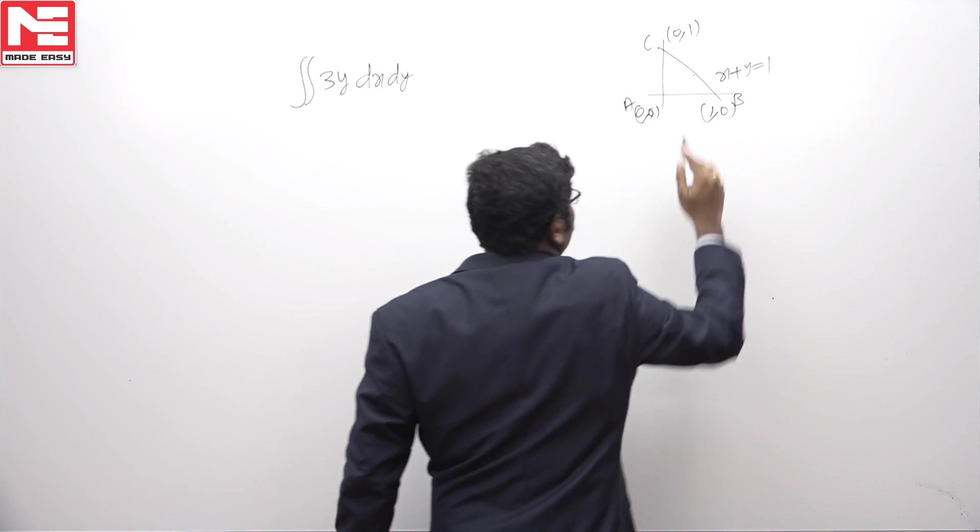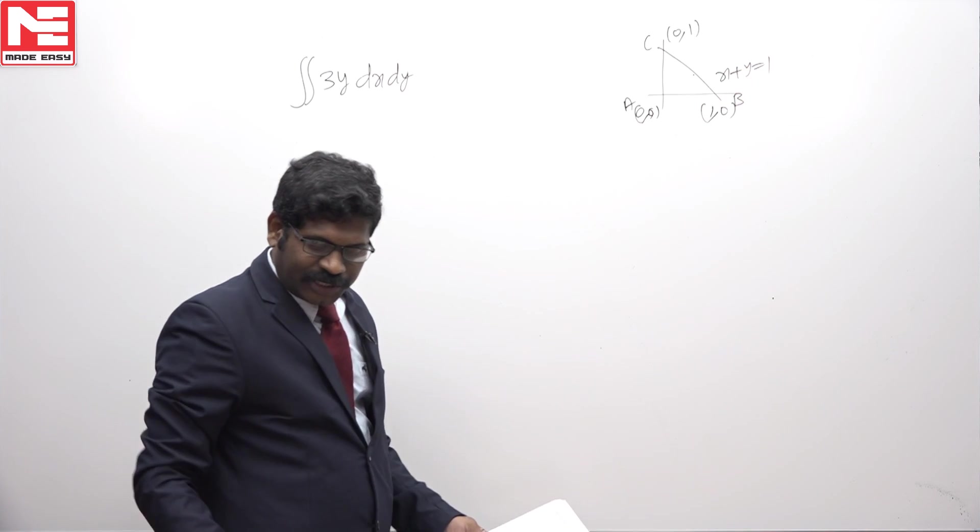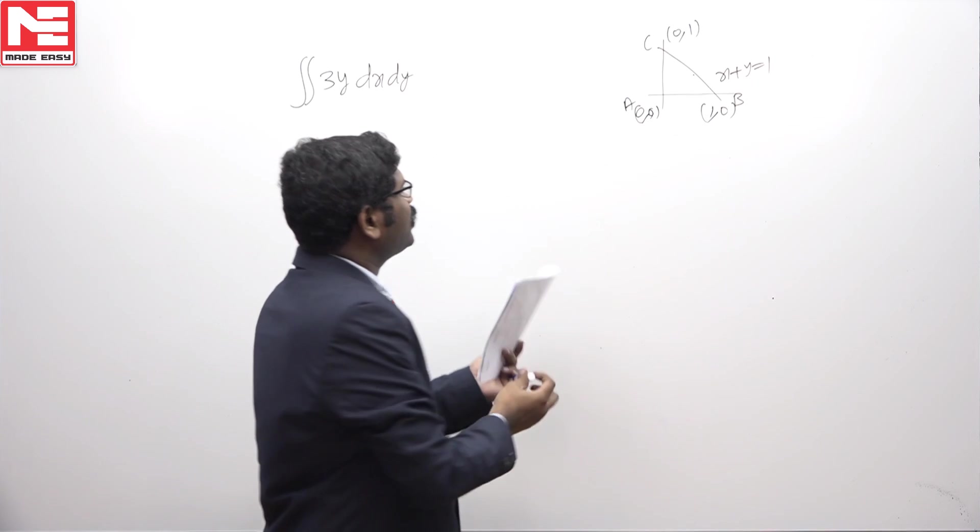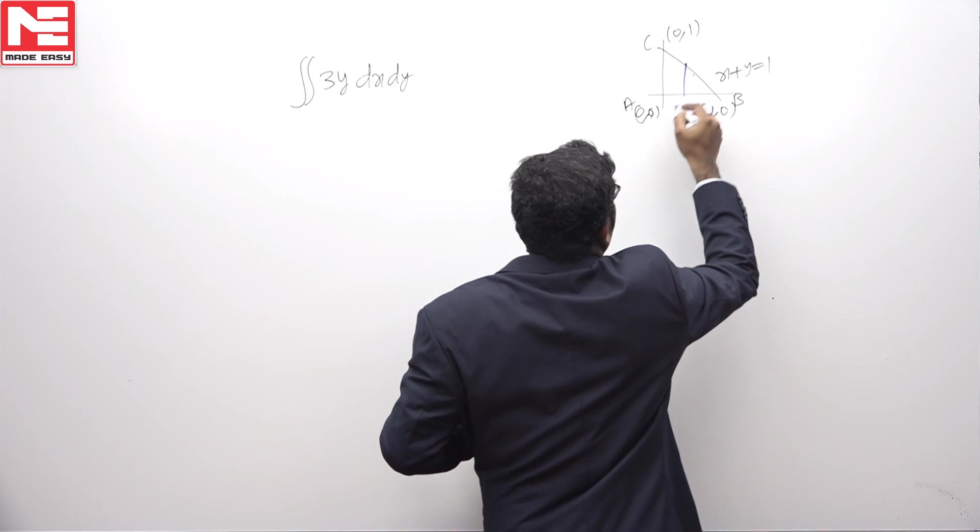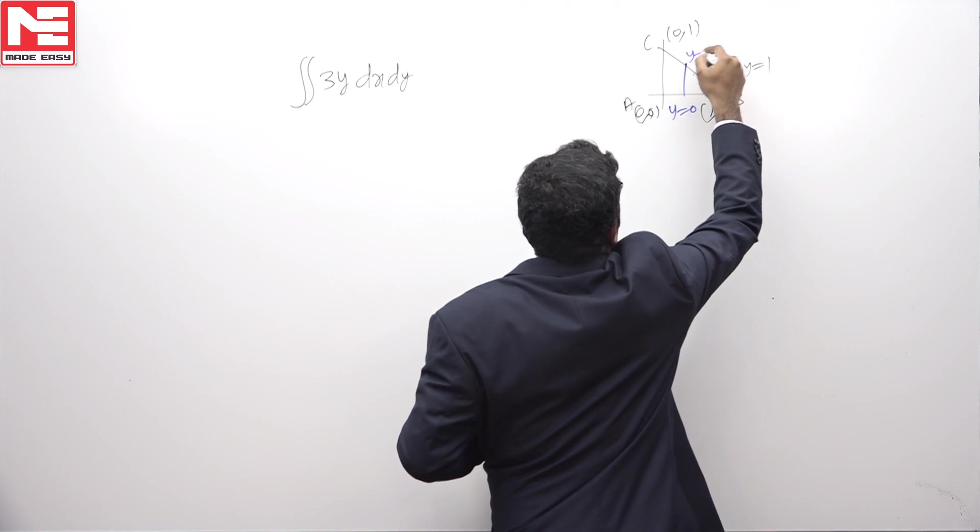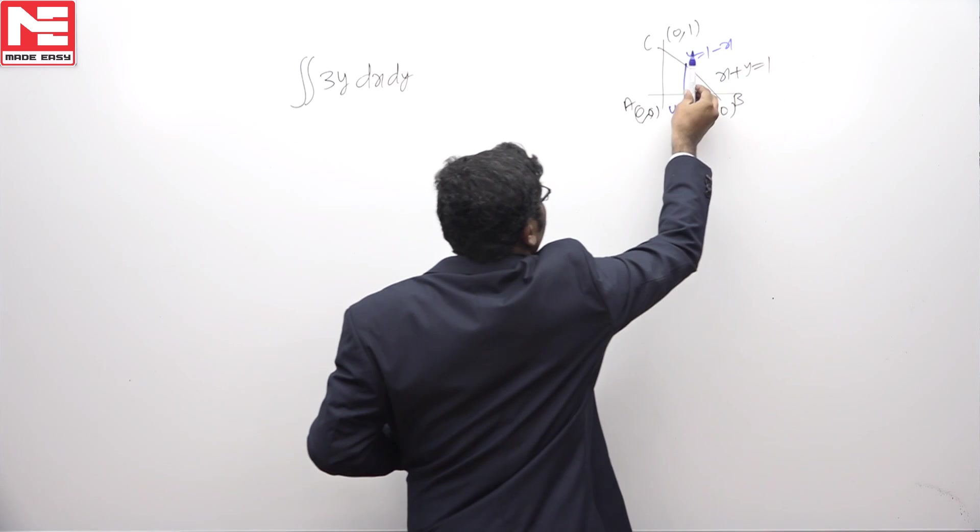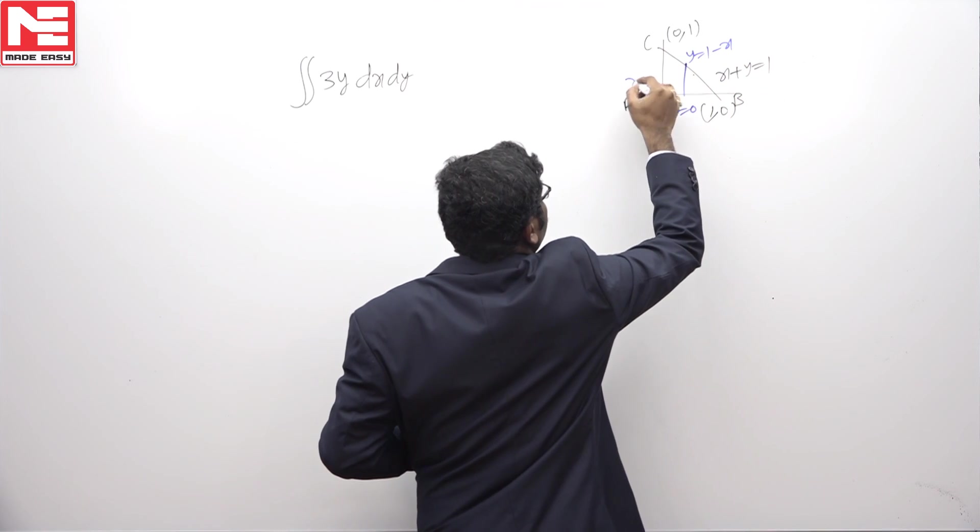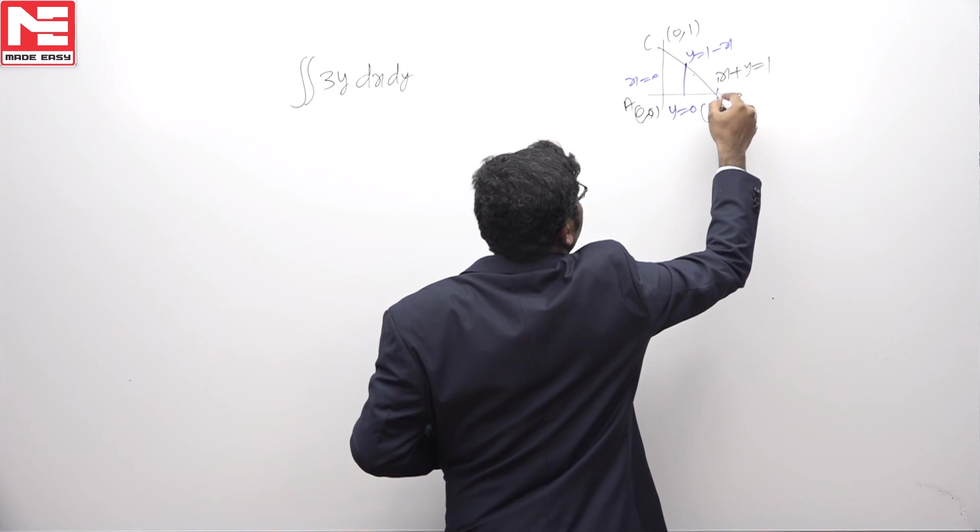When you fix a vertical strip, you will get y limits: y is 0 and y is 1 minus x. When you move like this, x is 0 and x is 1.